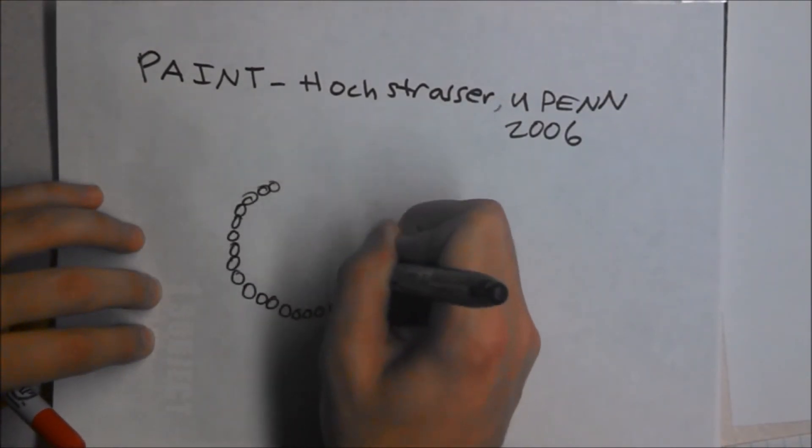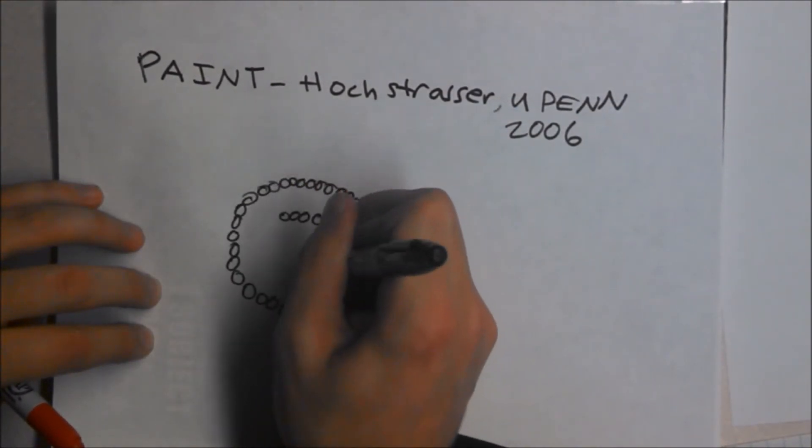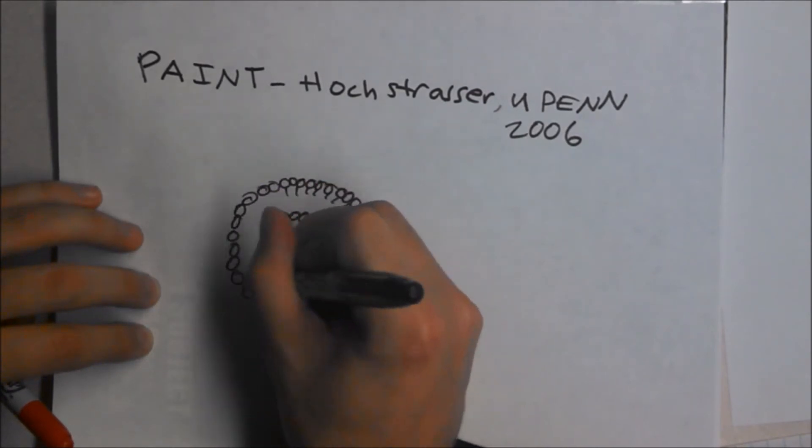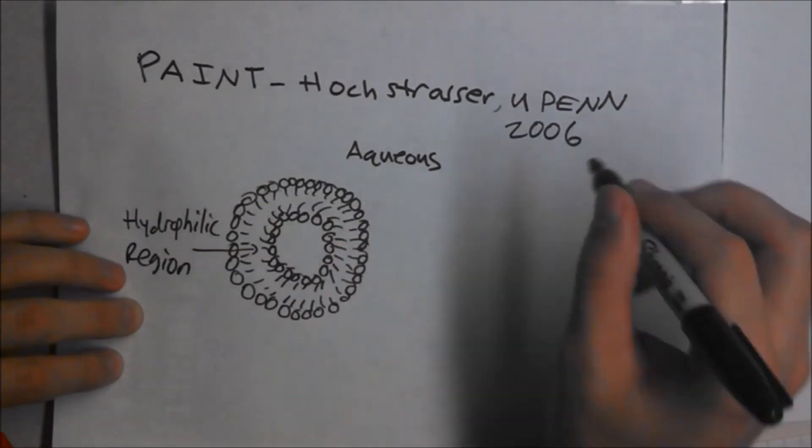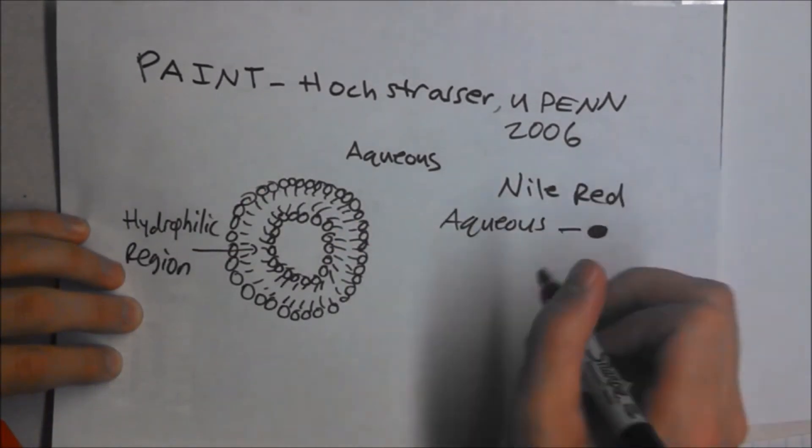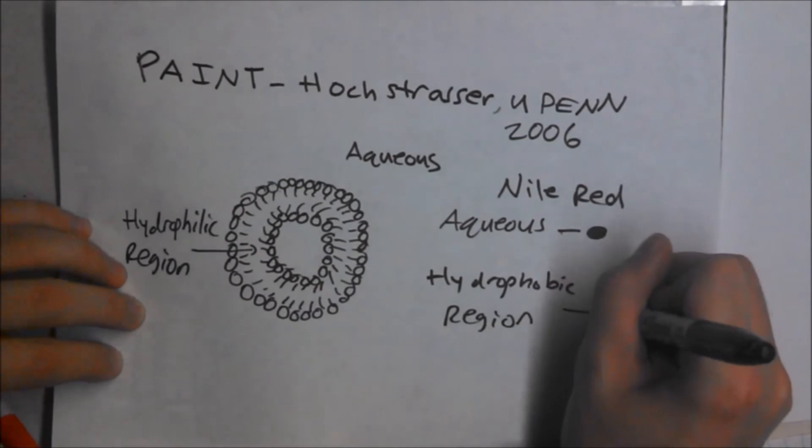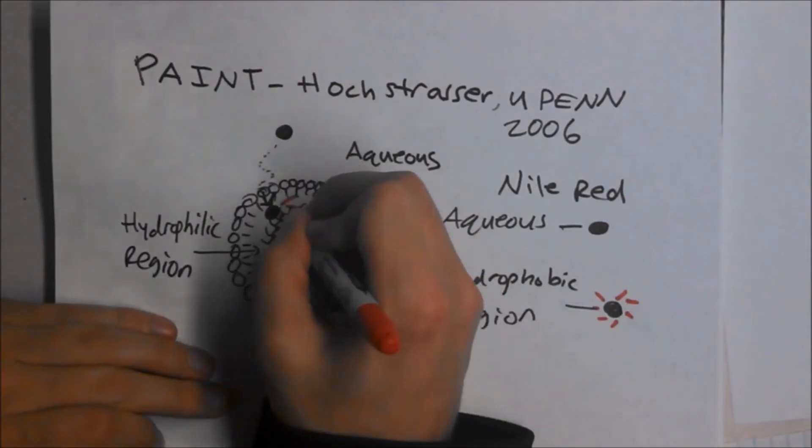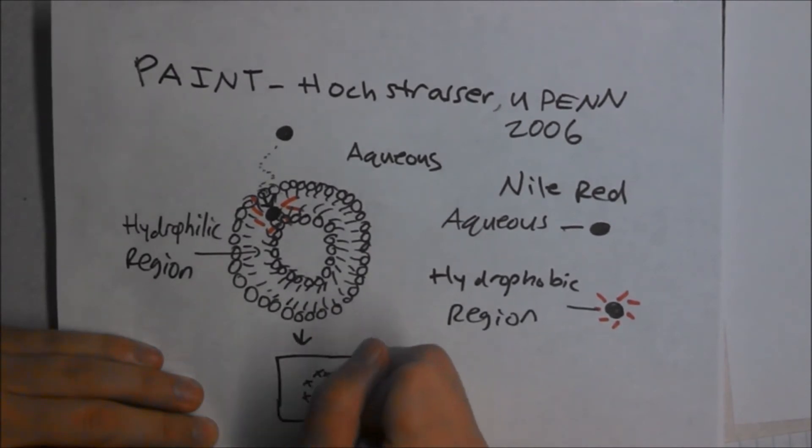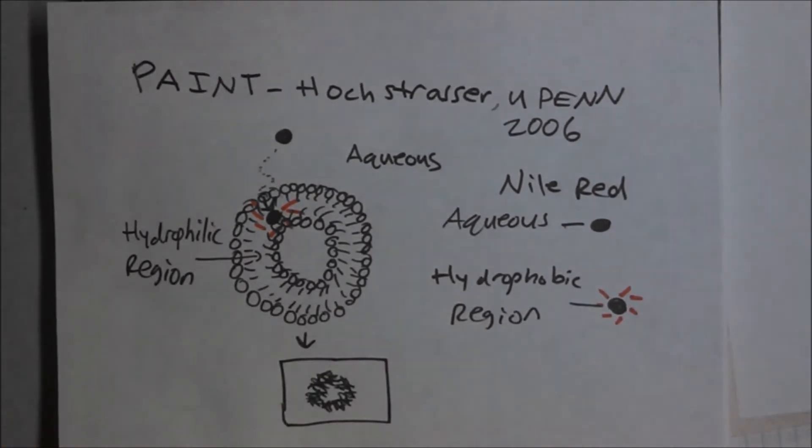The PAINT method was pioneered by the Hochstrasser group at University of Pennsylvania in 2006. They measured micelles with lipid bilayers with aqueous and hydrophobic regions. When the dye Nile Red was in the aqueous solution, the fluorescence was quenched. When it diffused into the hydrophobic region, it fluoresced. This fluorescence was used to map the hydrophobic region of the lipid bilayers as a super-resolution image.